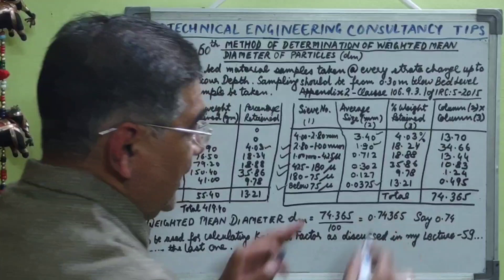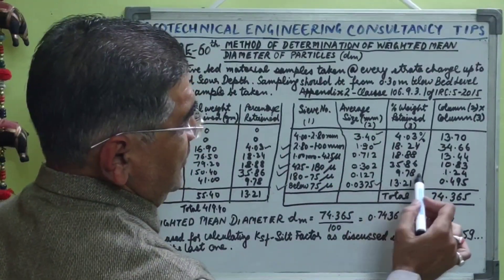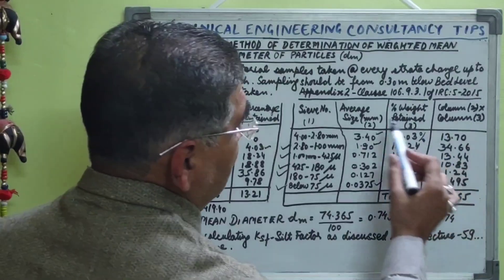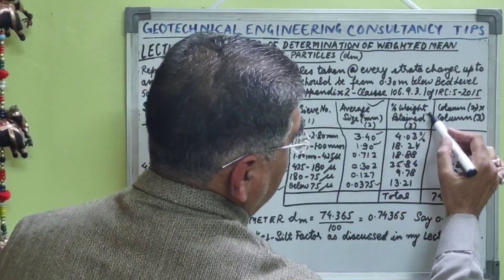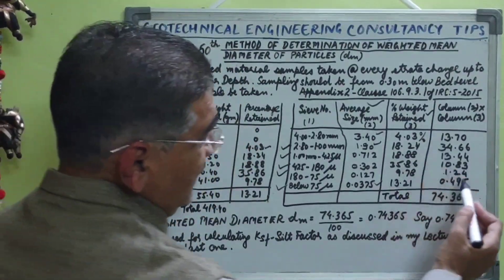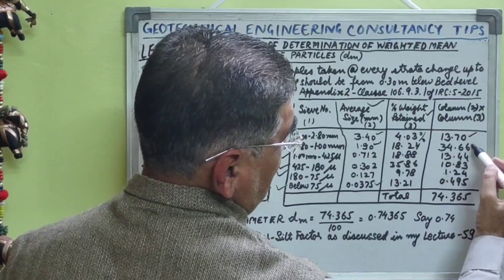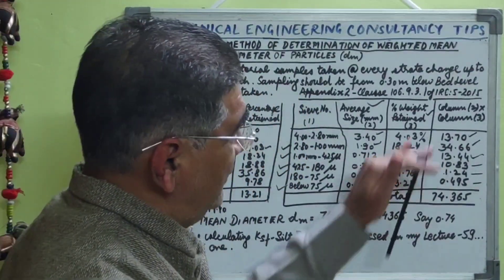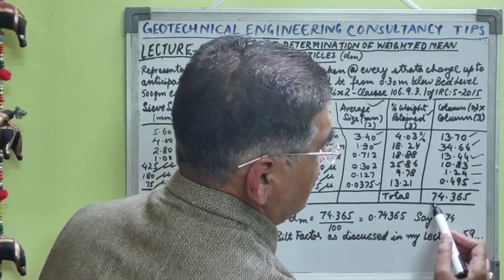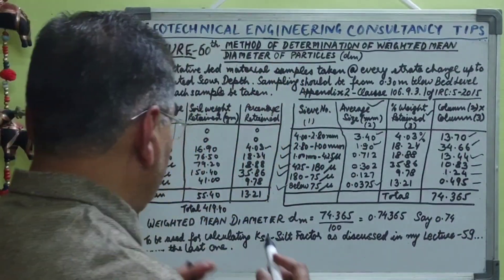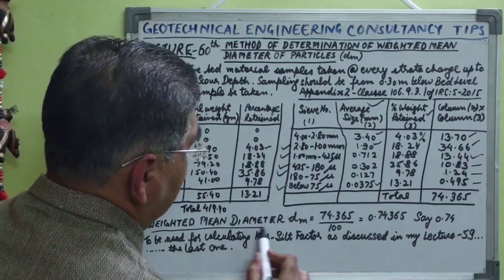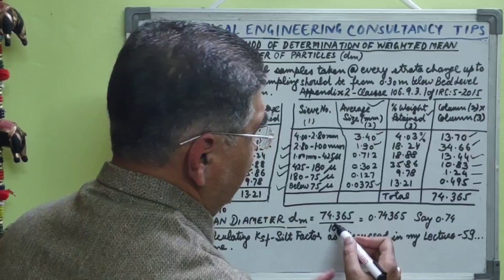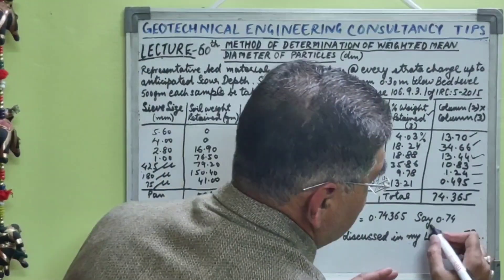The percentage weights 4.03, 18.24, 18.88, 35.86, 9.78, and 13.21 are listed in Column 3. In Column 4, we multiply the average sieve size (Column 2) by the percentage weight (Column 3) for each row. The resulting values are 13.70, 34.66, 13.44, 10.83, 1.24, and 0.495. The gross cumulative sum of Column 4 was found to be 74.365.